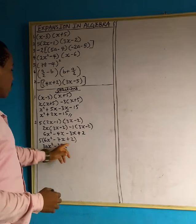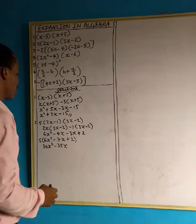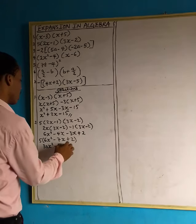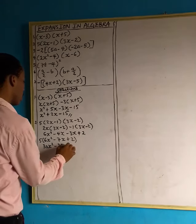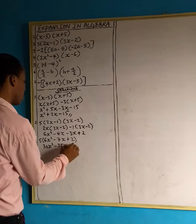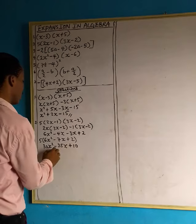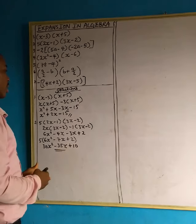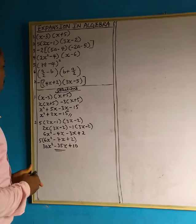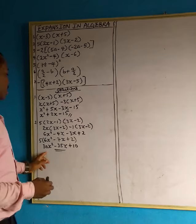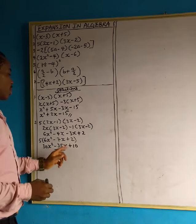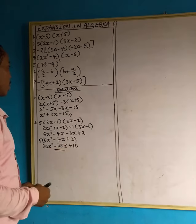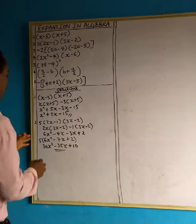Then 5 multiplied by positive 2 gives us positive 10. So our final answer is 30x squared minus 35x plus 10.